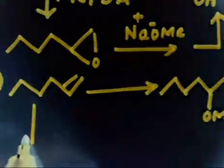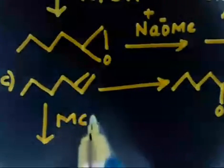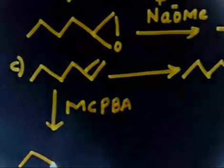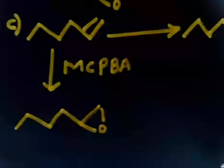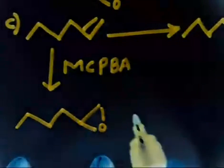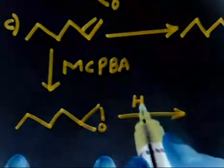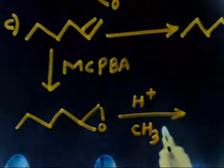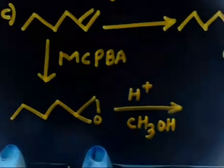So first I will treat this compound with MCPBA — meta-chloroperoxybenzoic acid — which gives the epoxide oxirane ring. Then I will treat with H⁺ in acidic medium using CH₃OH (methanol). Treating with H⁺ and CH₃OH will give you the desired product.